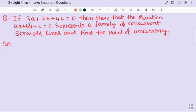Let us have a discussion here. If 3a + 2b + 4c = 0, then show that the equation ax + by + c = 0 represents a family of concurrent straight lines and find the point of concurrency.